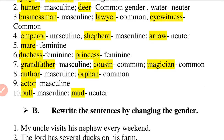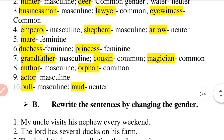Question number 6: 'The wicked winged duchess captured the princess and locked her in the dungeon.' Duchess is feminine gender and princess is also feminine gender.